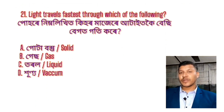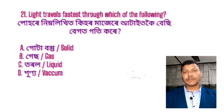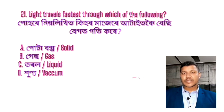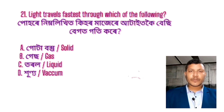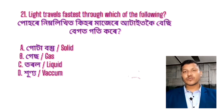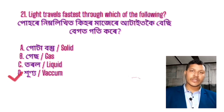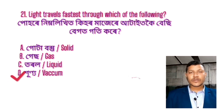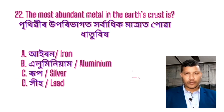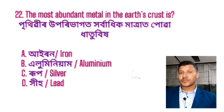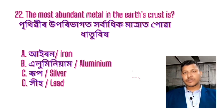Light travels through which of the following? Question number 22: The most abundant metal in the earth's crust.